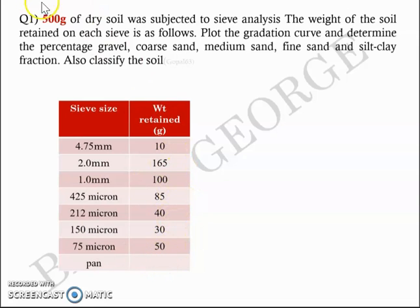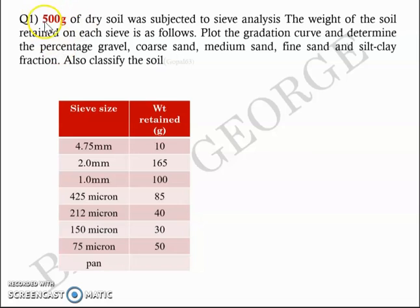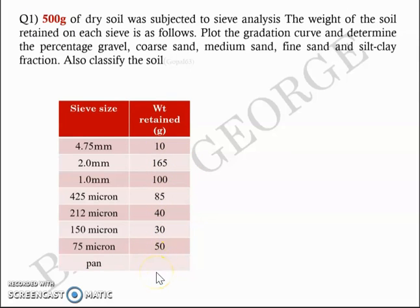The total weight taken for the sieve analysis is also given as 500 grams. So when you add all the values of weights retained here and compare it with the 500 grams already given, you'll get the weight of the soil retained in the pan.